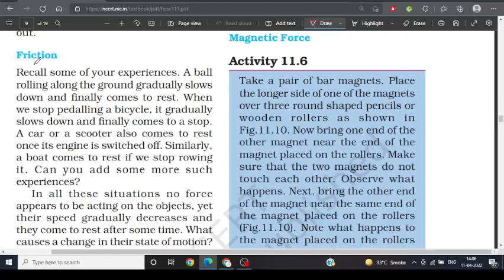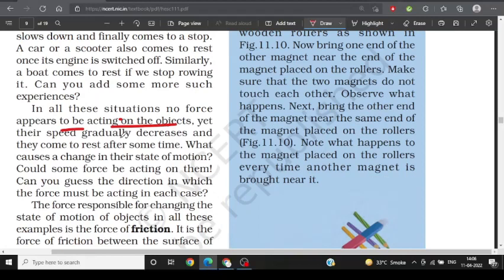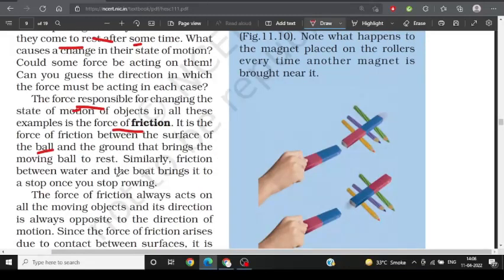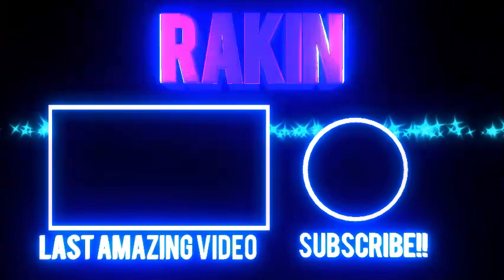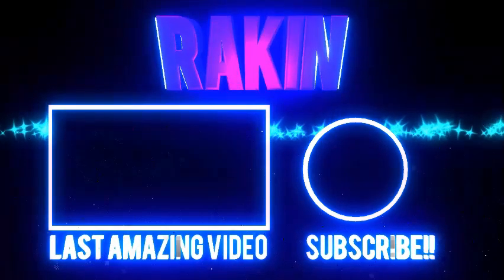Now we are learning about friction. What is friction? In all these situations, no force appears to be acting on an object, yet the speed gradually decreases and it comes to a stop later. What is happening? The force responsible for changing the state of motion is the force of friction. It is the force of friction between the surface, the ball and the ground, that brings the moving ball to rest. The force of friction always acts on all moving objects and its direction is opposite to the direction of motion.